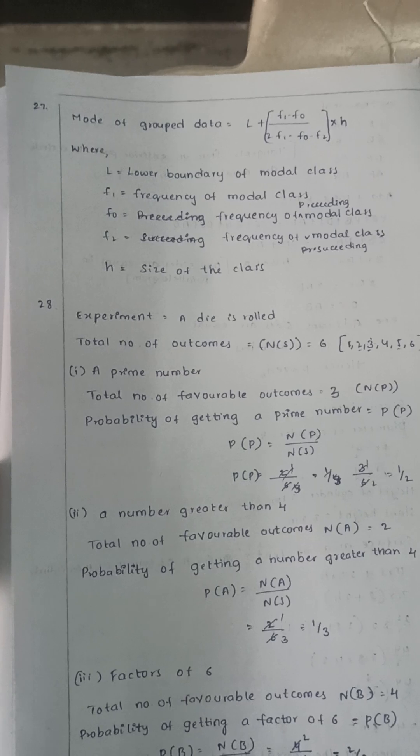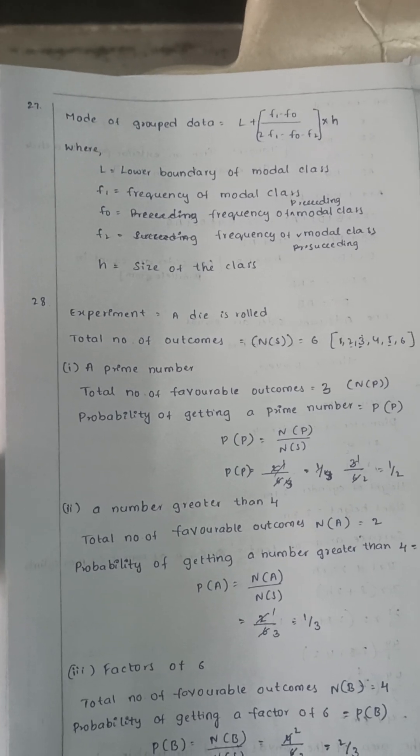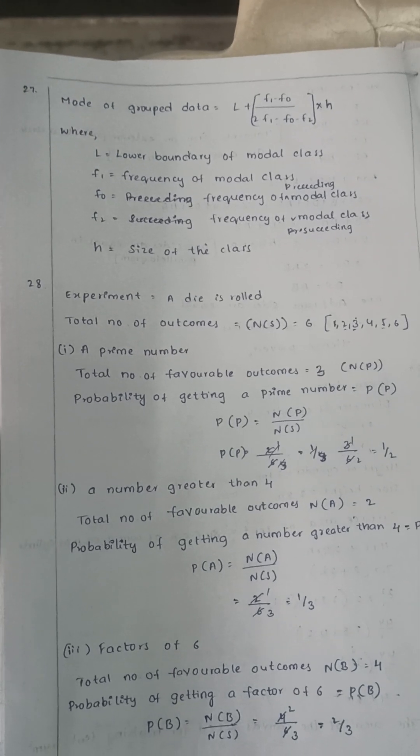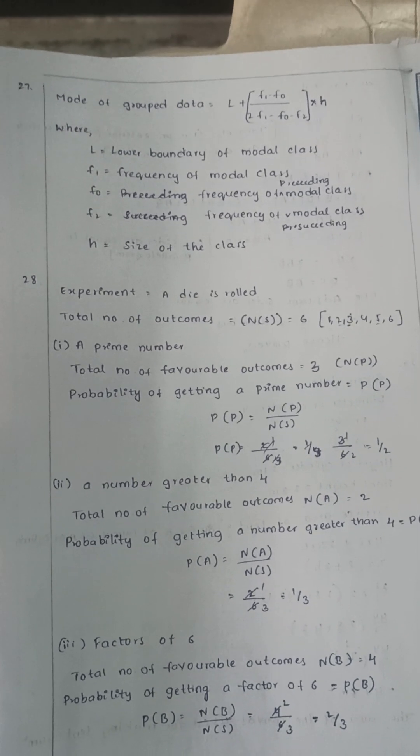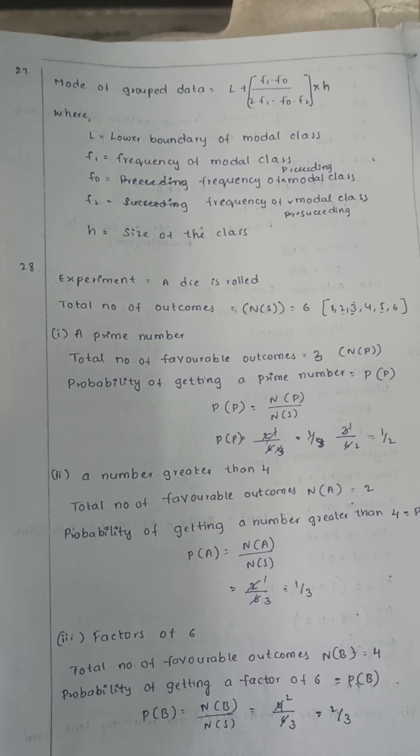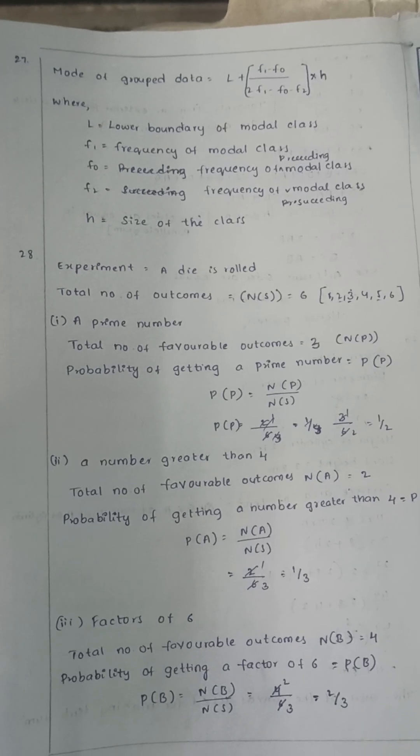Question 27: Mode of grouped data. The formula is: Mode = L + [(F1 − F0) / (2F1 − F0 − F2)] × H.